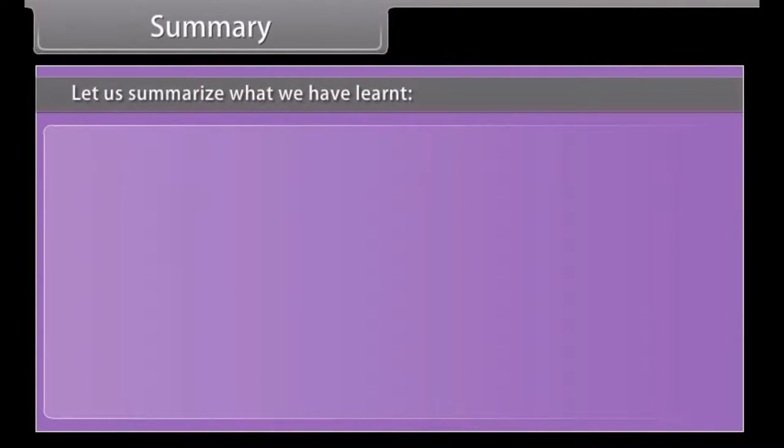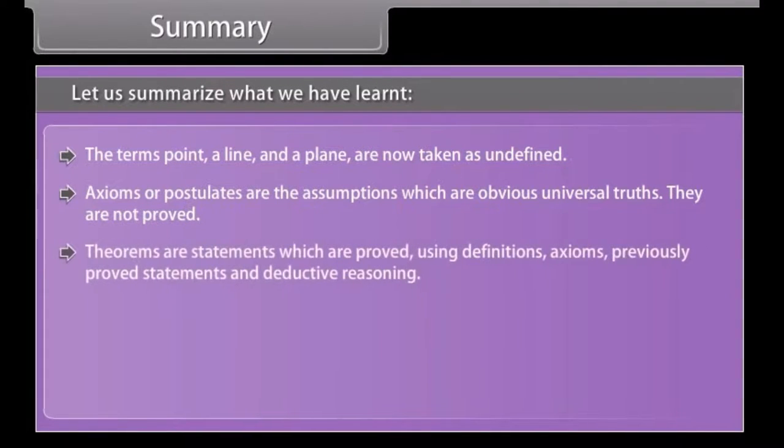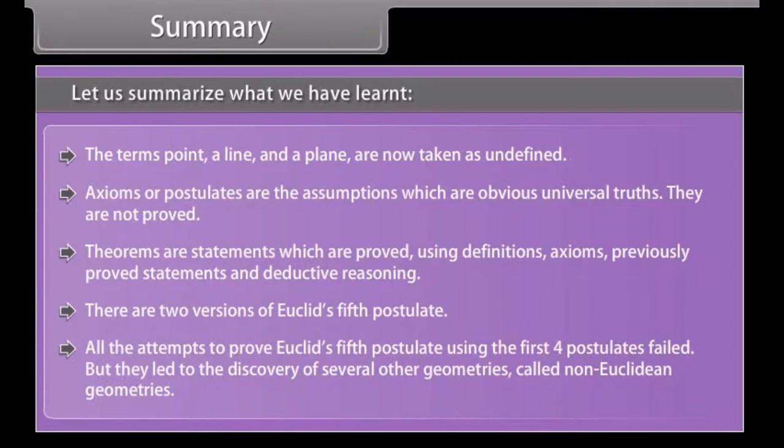Summary. Let us summarize what we have learnt. The terms point, a line and a plane are now taken as undefined. Axioms or postulates are the assumptions which are obvious universal truths. They are not proved. Theorems are statements which are proved using definitions, axioms, previously proved statements and deductive reasoning. There are two versions of Euclid's fifth postulate. All the attempts to prove Euclid's fifth postulate using the first four postulates failed, but they led to the discovery of several other geometries called non-Euclidean geometry.